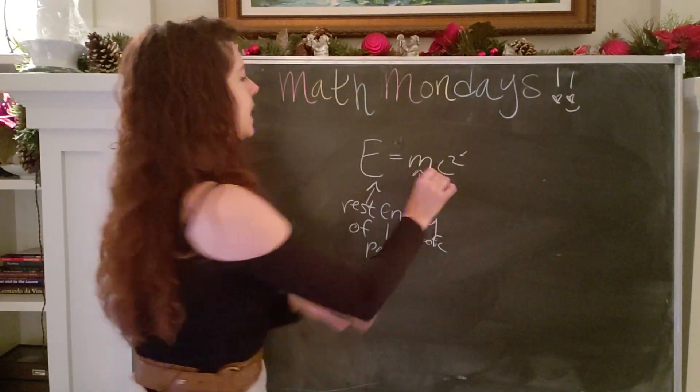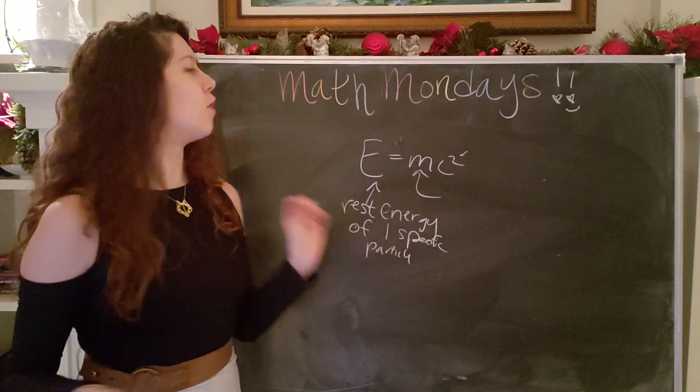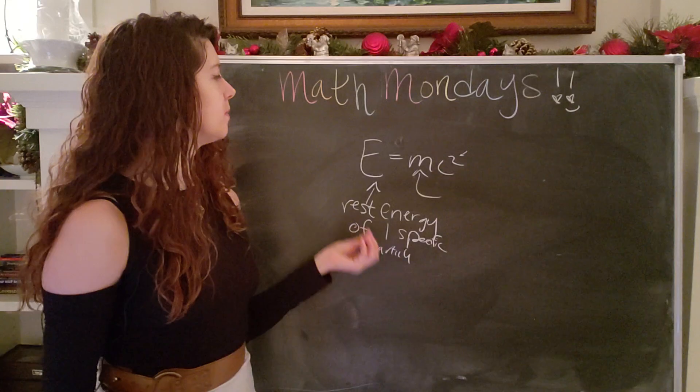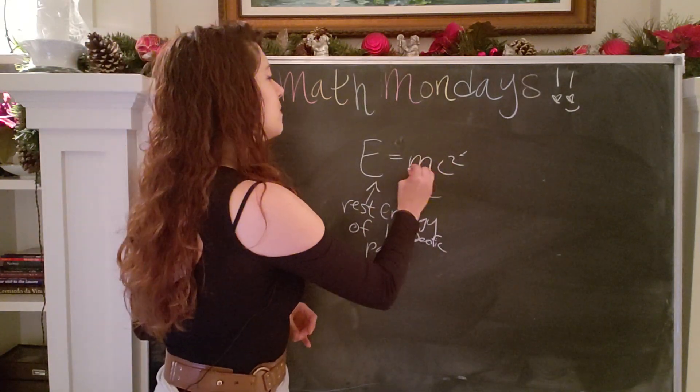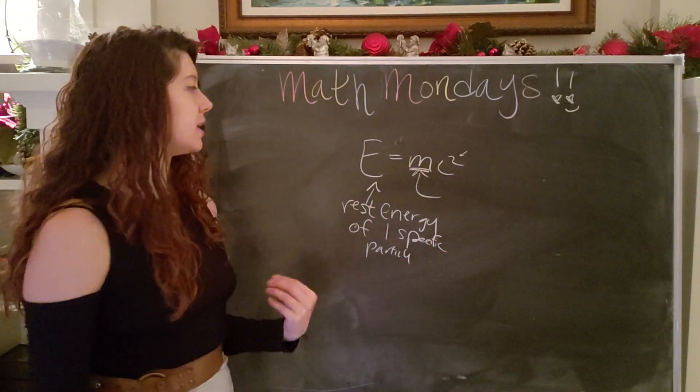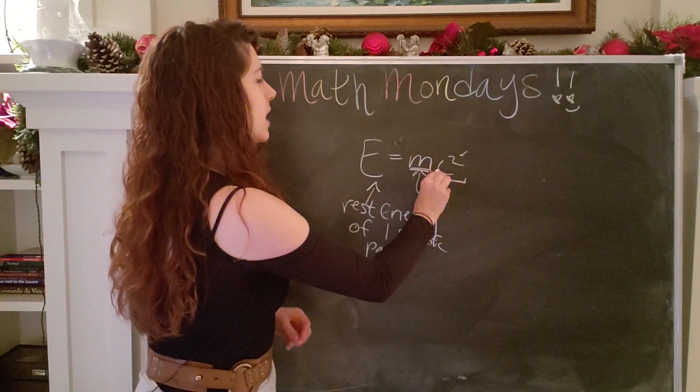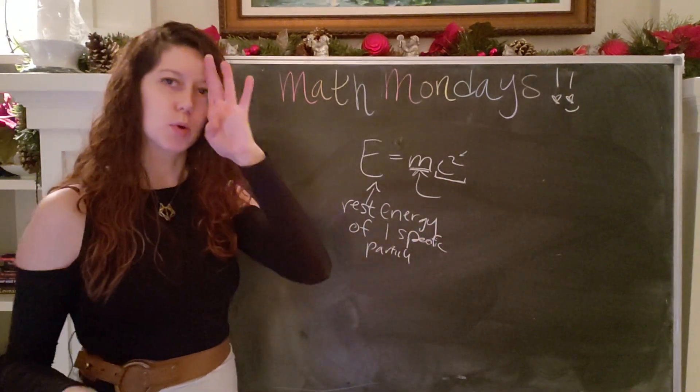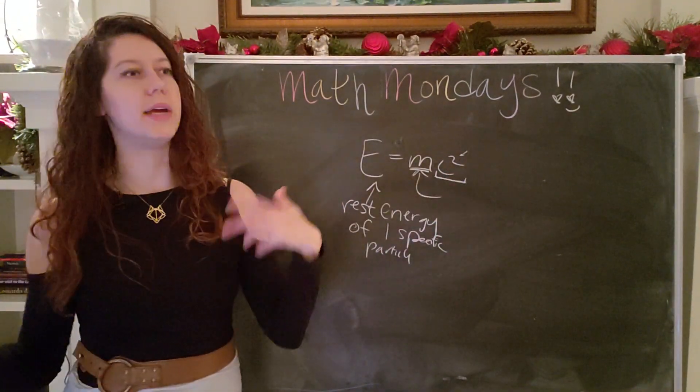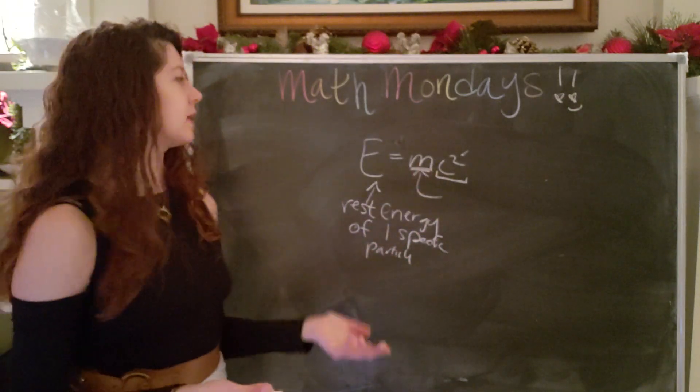And we are saying that it is equal to the mass of that particular particle, which is what M stands for times the speed of light squared. So interestingly enough, this is kind of what is called a constant of proportionality, meaning the speed of light for this context doesn't change significantly.